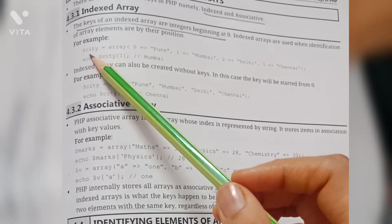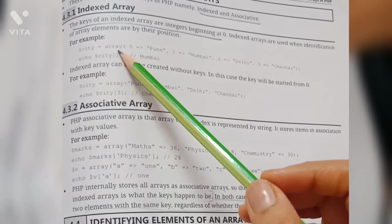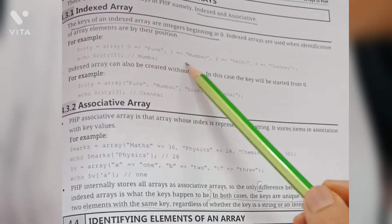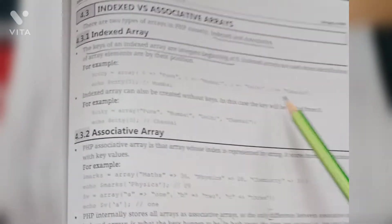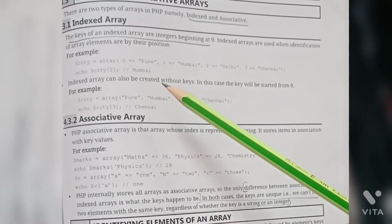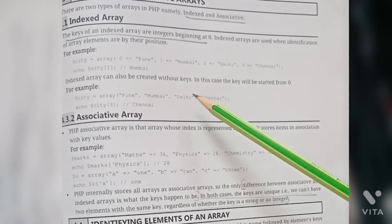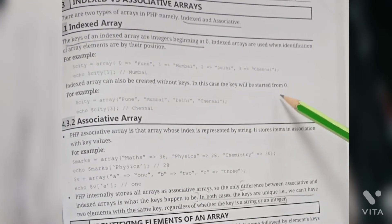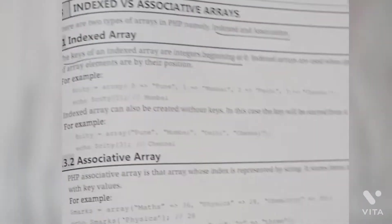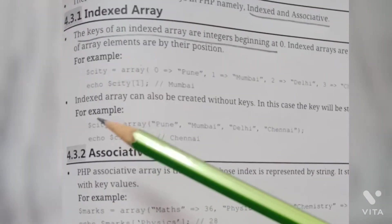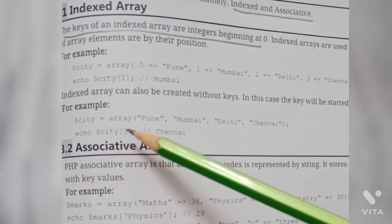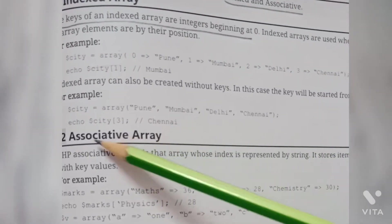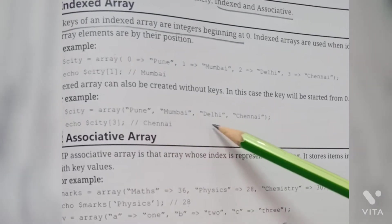So here dollar city is array containing elements zero, one, two and three. Indexed array can also be created without keys. In this case, the key will be started from zero by default. Let's see example: dollar city equals to array with values Pune, Mumbai, Delhi, Chennai semicolon. This is array created without keys.